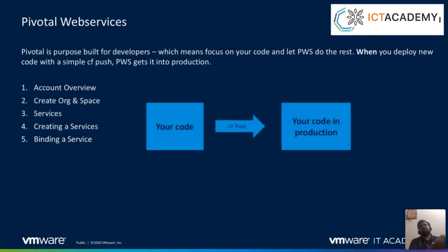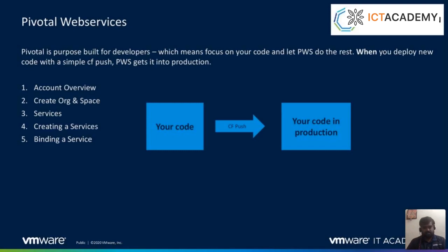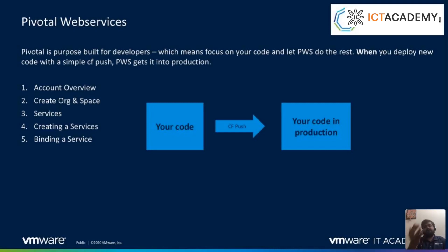Another kind of service available in PWS is database services. If you develop an application and want to save data in a backend database, there are services like RabbitMQ, MySQL, and Postgres available. These services can be bound to your application to save data generated by your application to the databases. Everything is available for free at different tiers, and as a developer you can bind the service to your application and save data.